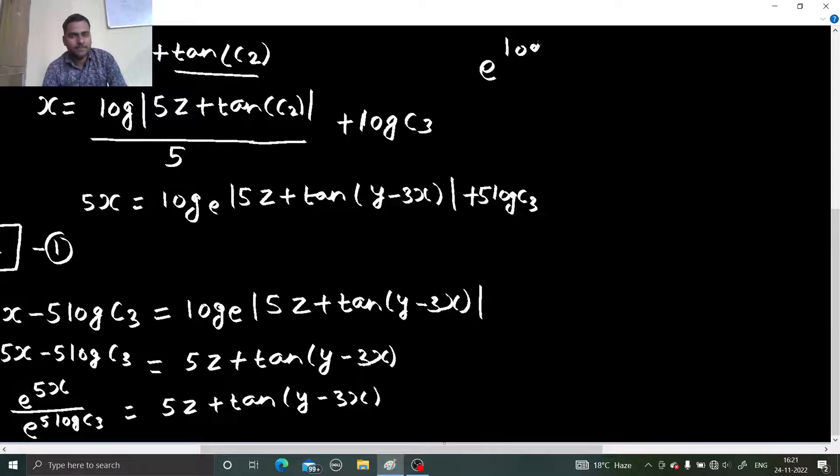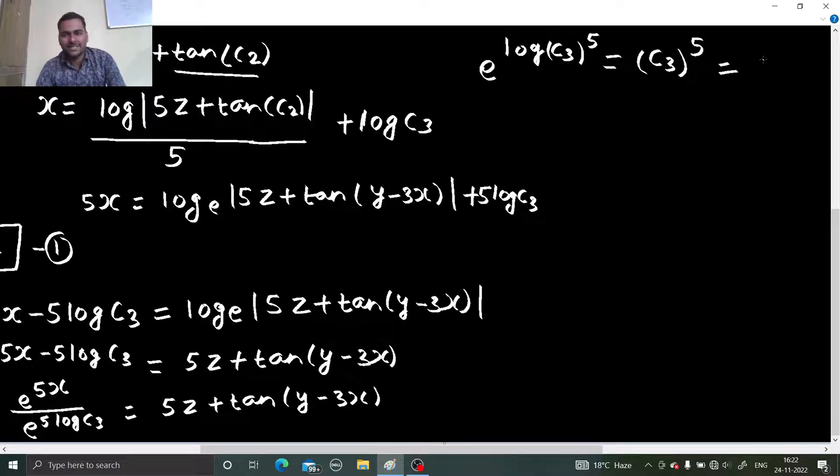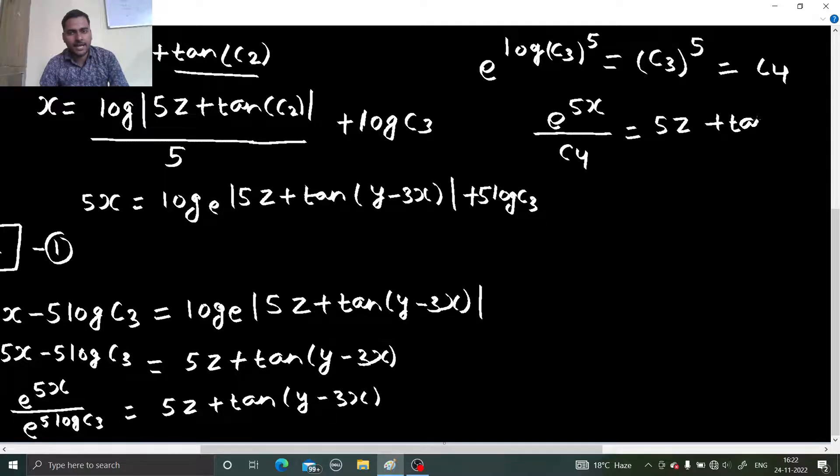You can take to the power. So log c3 power 5. And now, this gives simply c3 power 5. Go as complex as you can go. And c3 power 5 and here the constant c4. No problem. So you are getting e power 5x divided by c4 equals to 5z plus tan y minus 3x.